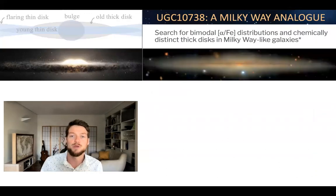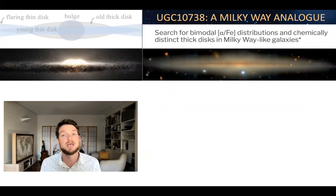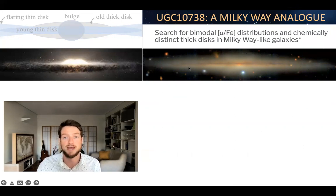And so this is what we've done. We've used this galaxy called UGC 10738, which is a Milky Way-like galaxy. And by Milky Way-like here, I mean it has the same stellar mass, it has the same color, but also the same morphology. So it has this classic disk with a dust lane, but it also has this boxy peanut bulge, which is indicative of a buckled bar in edge-on galaxies.